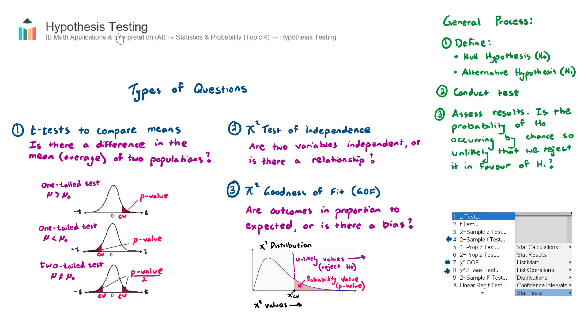In this video, we are looking at hypothesis testing, which is part of the AI course in topic four, statistics and probability.